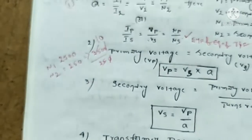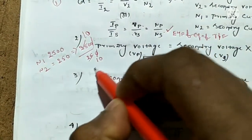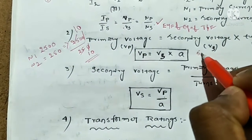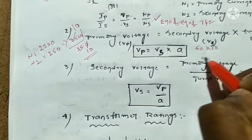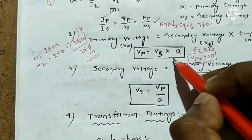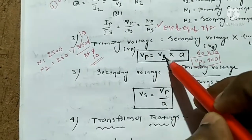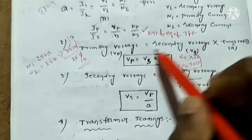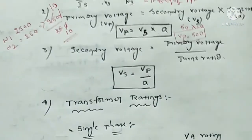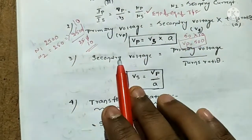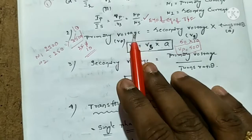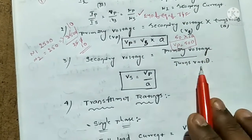So the turn ratio is 10. Now in the transformer ratio, secondary voltage is 50, so primary voltage equals secondary voltage multiplied by turns ratio, which is 50 into 10, giving primary voltage as 500. Secondary voltage equals primary voltage divided by turns ratio, which is Vs equals Vp by a.